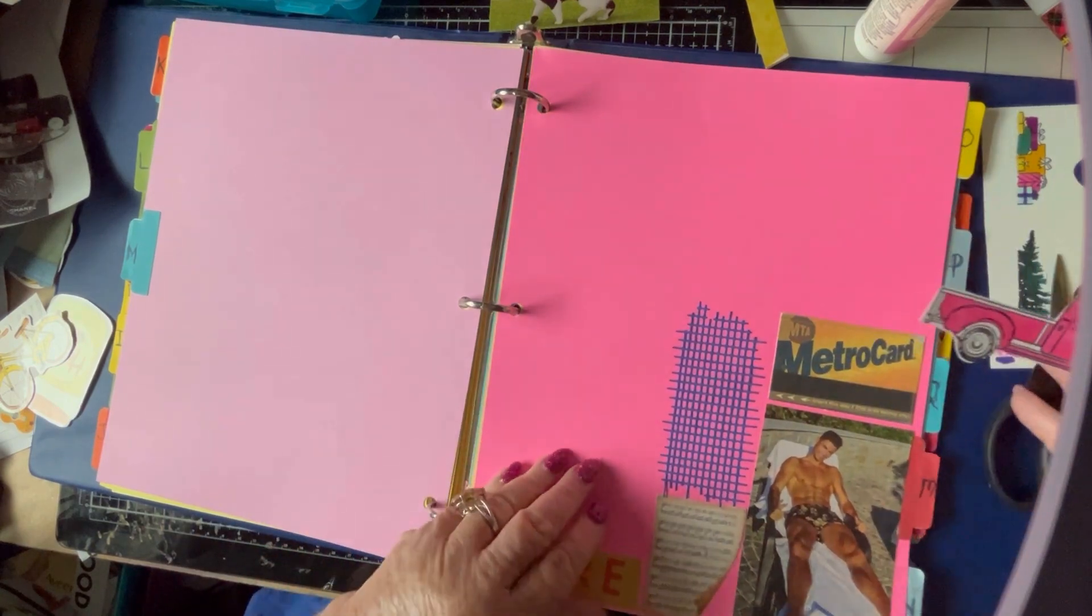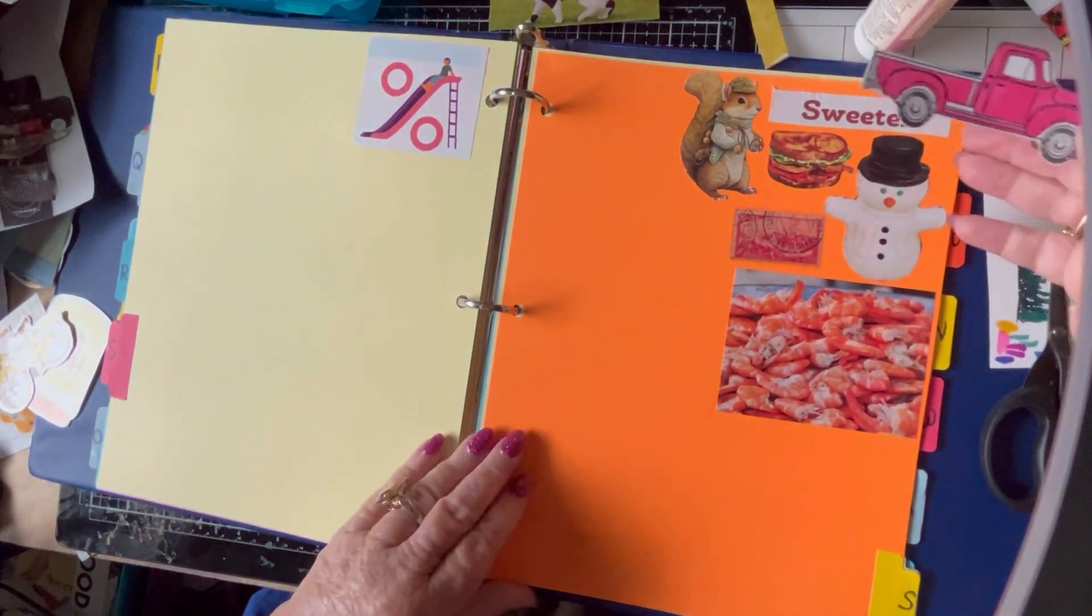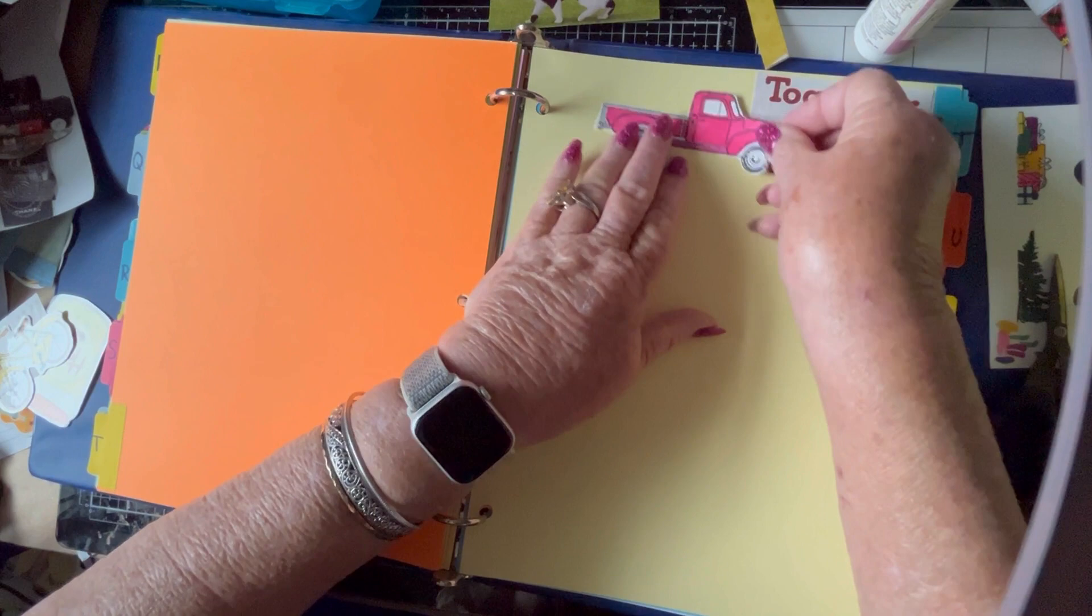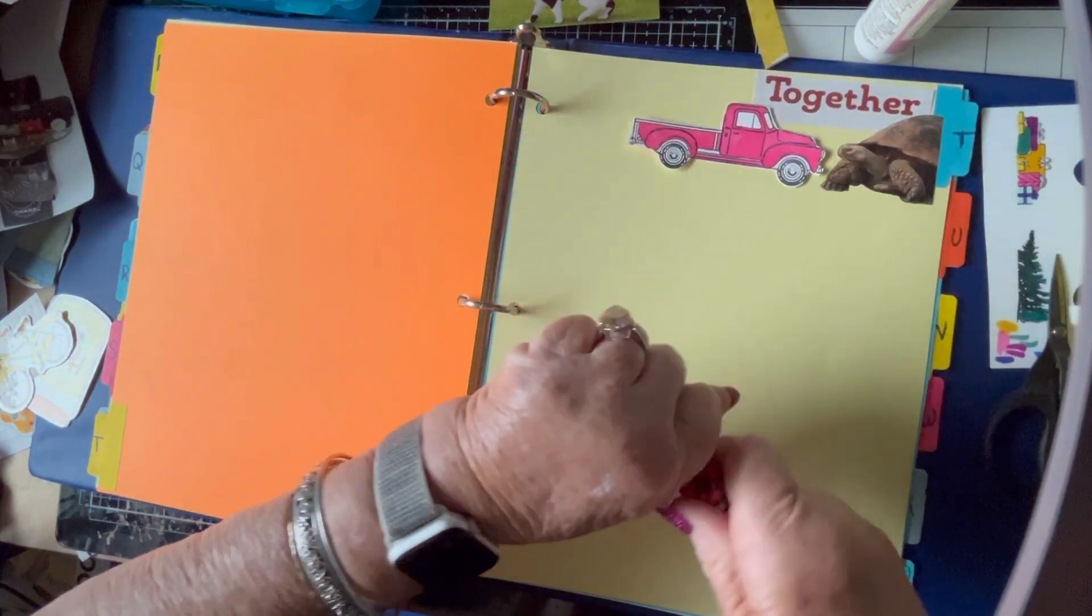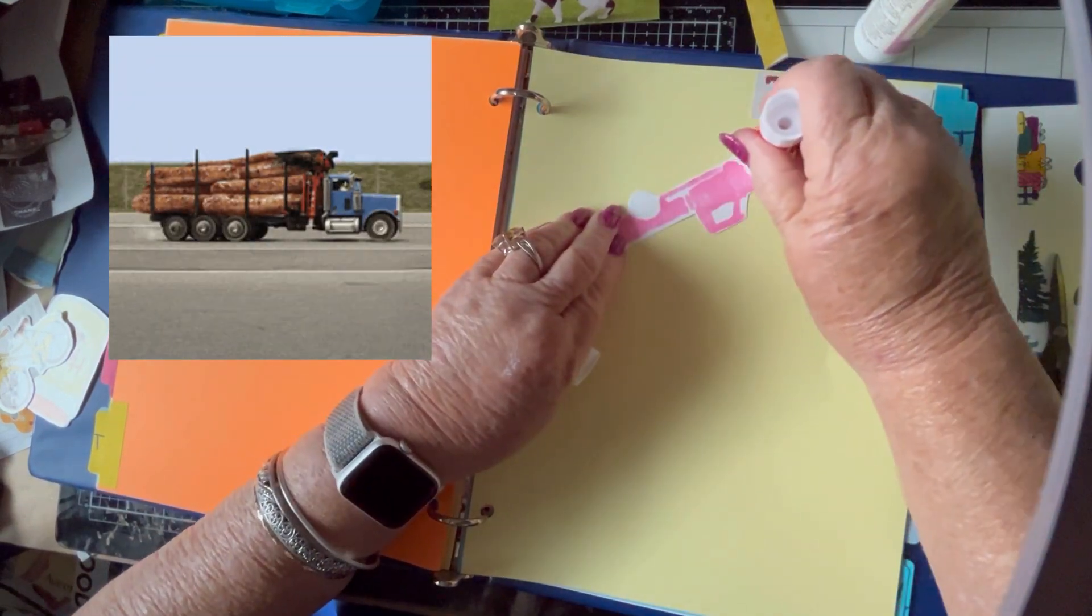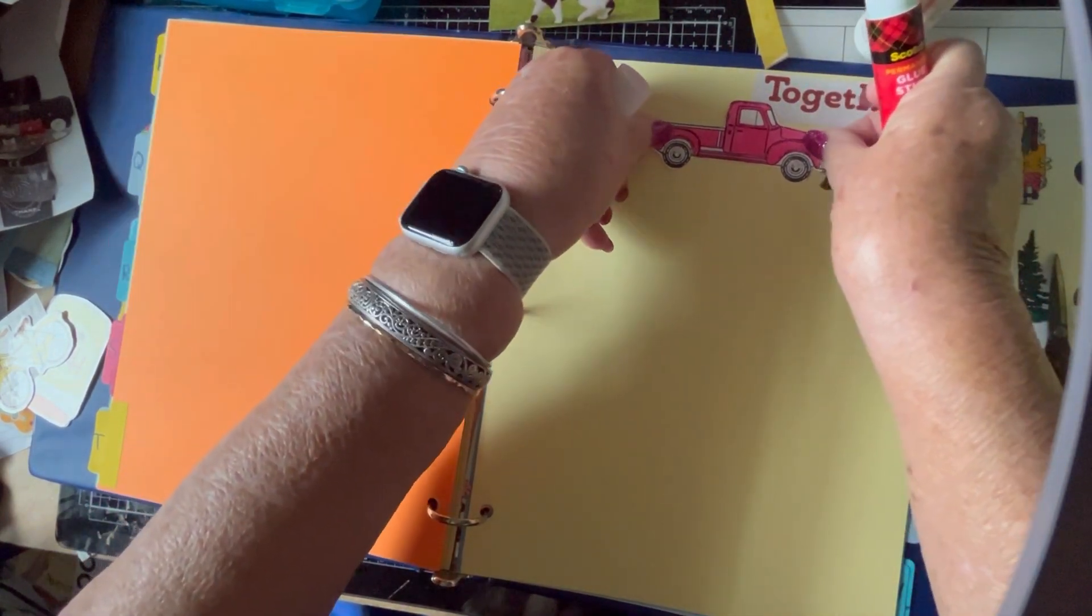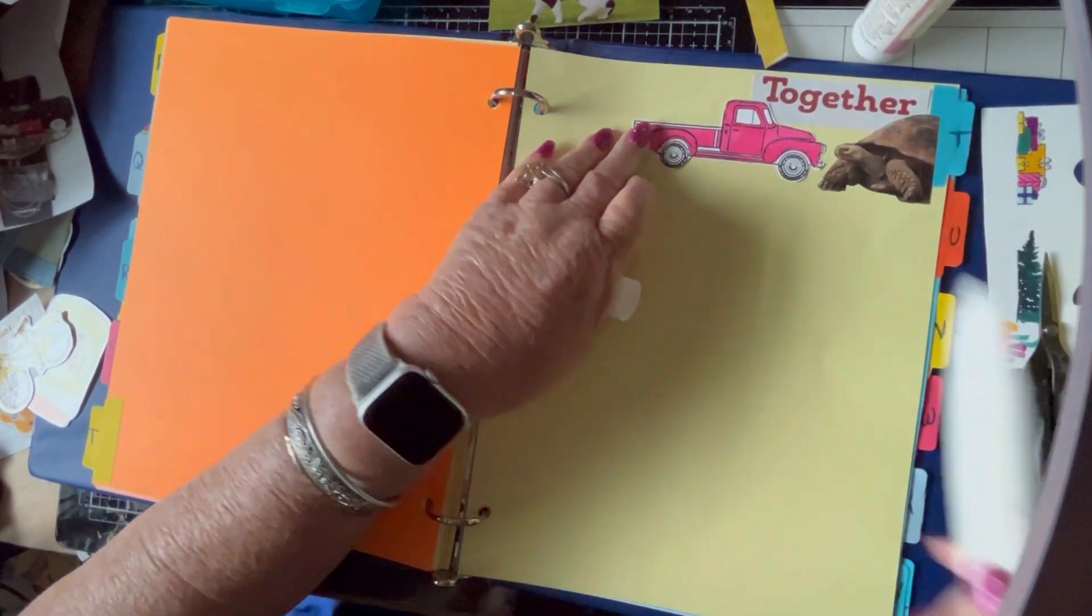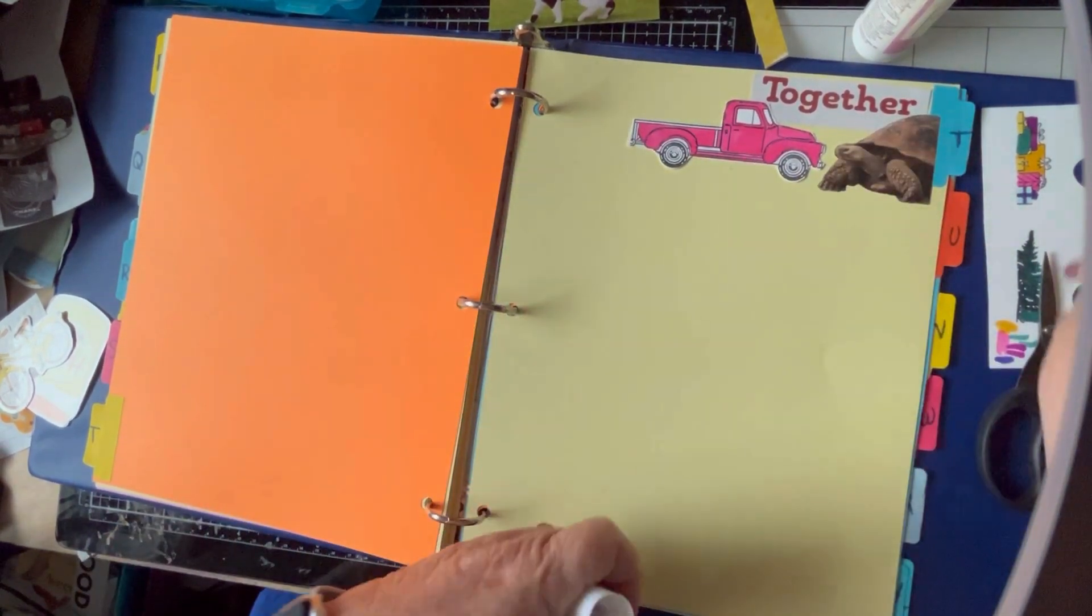So we'll put that on the T page. This I just stamped and then I colored it in. Could have stamped it on colored paper, but I didn't. So we will put the truck right here. And that's nice and colorful. Get that going on this page. Use the bone folder. Give it a smush, smush, smush.